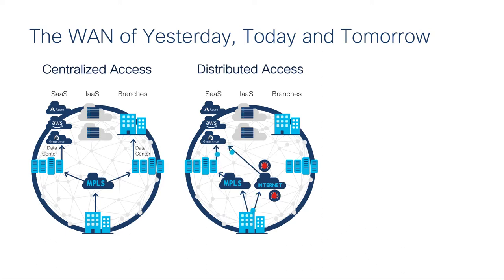But some organizations need more. In fact, these organizations have asked how they can combine the benefits of both access models. With centralized access, it was easy to control and optimize cloud-bound traffic — it was just inefficient. With distributed access, the traffic is more efficient, but it's a bit harder to control and optimize.